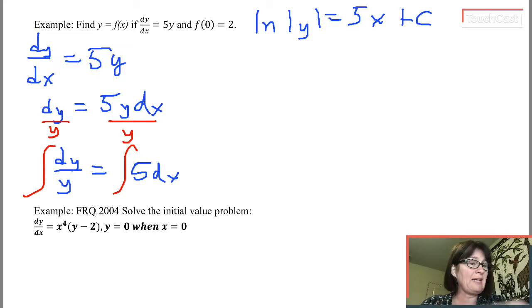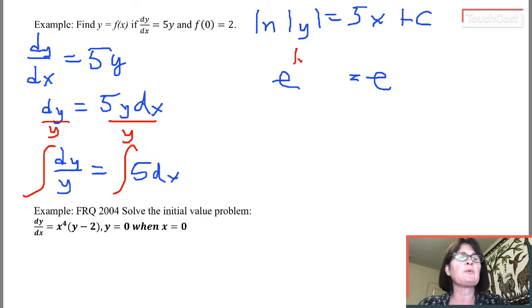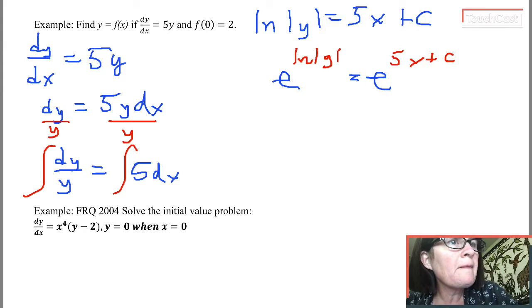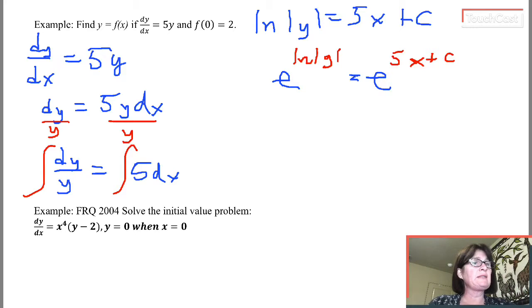Now we're going to do kind of what we did in that last little example. I want to try to isolate y, but y is stuck inside a natural log problem. So here's what I'm going to do. I'm going to make e the base. Make both of those the exponents. This is called exponentiating. So on the left-hand side, e to the natural log of cancels out, and I'm going to end up with